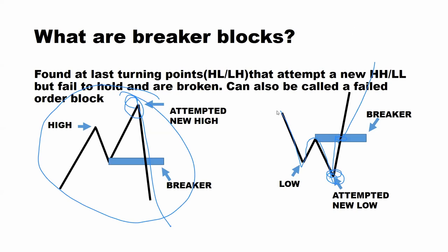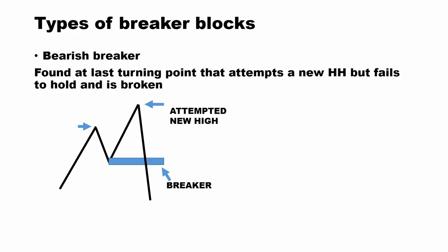Now let's look at the types of Breaker Blocks. Of course in the markets we are in for two things — either buying or selling — so we're going to have the bearish and the bullish. The bearish one is found at the last turning point that attempts to create a new higher high but fails to hold and is broken. Just like from the name, a bearish one means we're looking for sales. So when the market creates a high, a higher low, a higher high — that order block is supposed to hold price before it pushes up, but the moment it fails to hold price and it is broken, this becomes your bearish Breaker Block. In simple terms, a Breaker Block is a failed order block in whatever direction you are in.